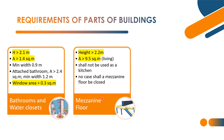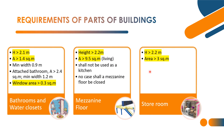Next: mezzanine floor. Height of the mezzanine floor: 2.2 meters. Area: minimum 9.5 square meters if used for habitable or habitual living purposes. The mezzanine floor should be open to the main floor — it should not be closed. It shall not be used as a kitchen. Next: storeroom. Height: 2.2 meters. Minimum area of storeroom: 3 square meters.